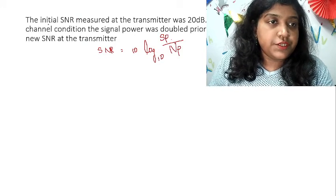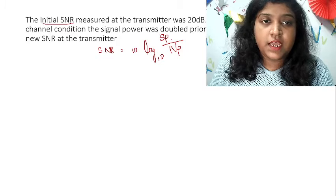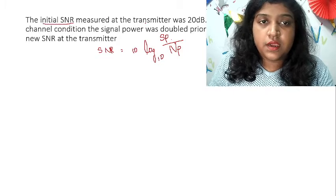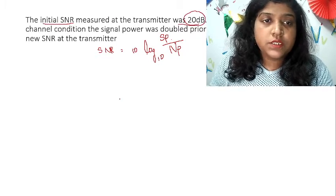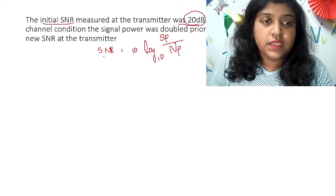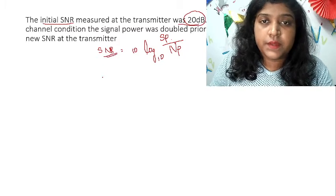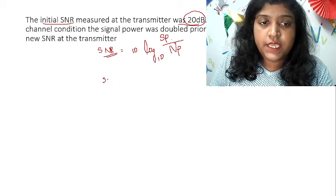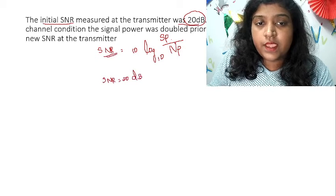In the given question, the initial SNR measured at the transmitter was 20 dB. So, what is your initial SNR? It is 20 dB, as given.